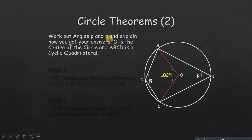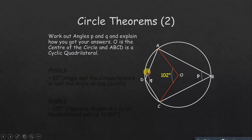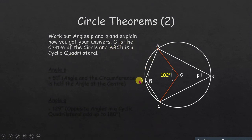Another example: work out angle p and q and explain how you got your answers — reasons are required. O is the center of the circle, and when you sum all angles at O they give 360 degrees. Quadrilateral ABCD is a cyclic quadrilateral because it is formed inside the circle.